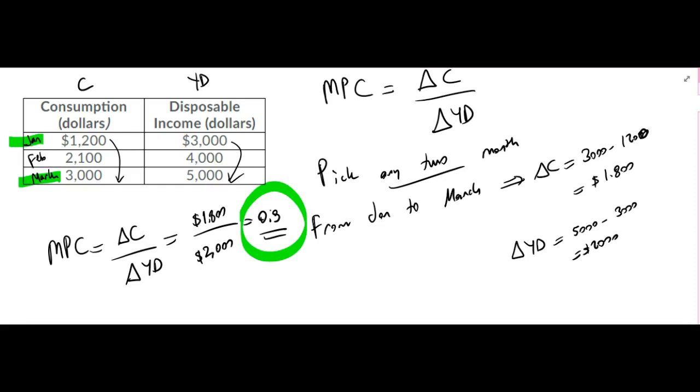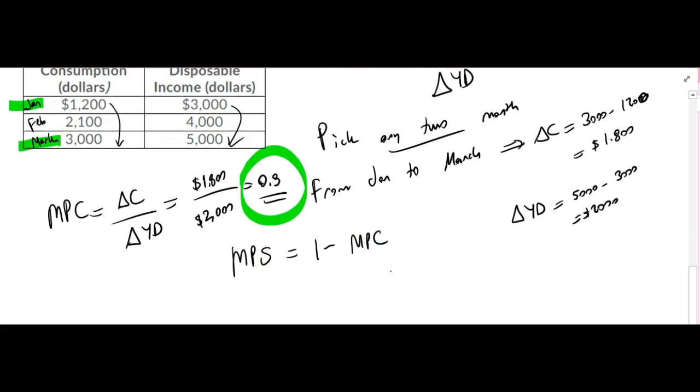So this question is asking about MPS, which is nothing but 1 minus MPC. I'll just plug the numbers in here, and I will get 1 minus 0.9, which is going to be equal to 0.1.